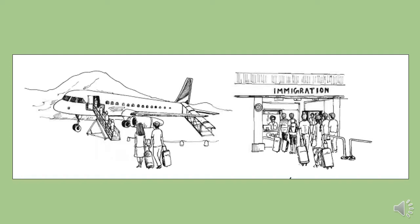At the beginning of the class, let's look at the pictures. What can you see in this picture? There are two pictures on the screen. In the first picture, we can see that some passengers are going to travel and there is a plane. In the second picture, there is an immigration counter and some passengers are waiting over there.